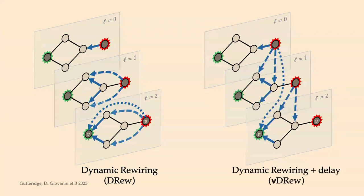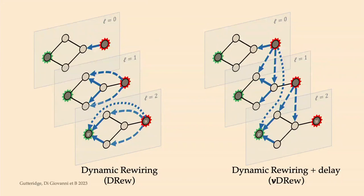We introduce dynamic wiring: rather than immediately connecting all nodes like a transformer, we delay information from a source node until the moment it would naturally have arrived — implemented as geometric sparse skip connections. Information reaches the right node at the right time, not entangled with neighbors. This appeared at ICML last year and was state-of-the-art on a long-range interaction benchmark. Though large pretrained models now win on benchmarks, this geometrically motivated approach still has value in understanding why it works.